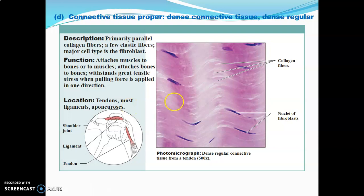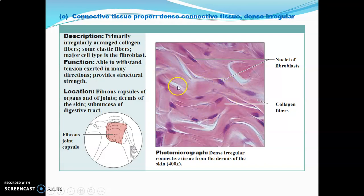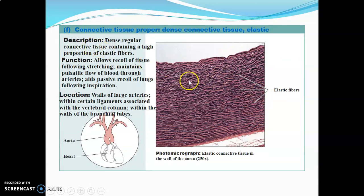An example of an aponeurosis is the aponeurosis of the external oblique abdominis muscle, whose infolding forms the inguinal ligament. Dense irregular connective tissue has lots of fibers arranged haphazardly. Fibroblasts are still the major cell type — spindle-shaped, wider at the center and tapering at the edges — with irregularly arranged collagen and some elastic fibers. It withstands tension from many directions and is found in fibrous capsules of organs and joints, the dermis of skin, and the submucosa of the digestive tract.